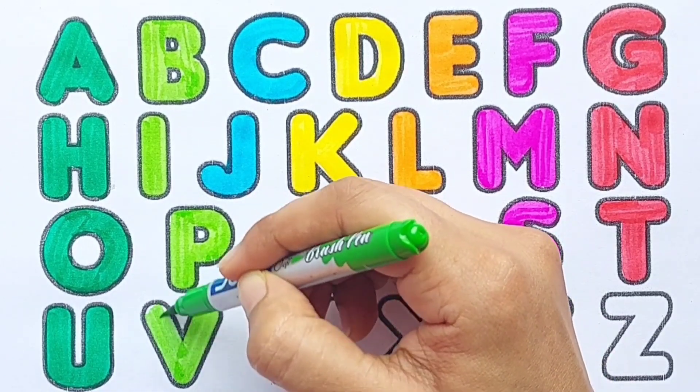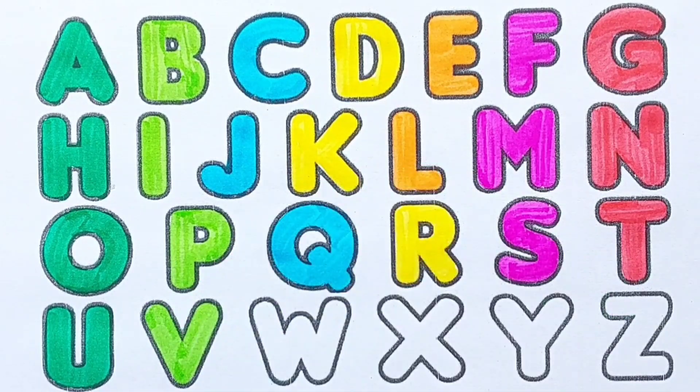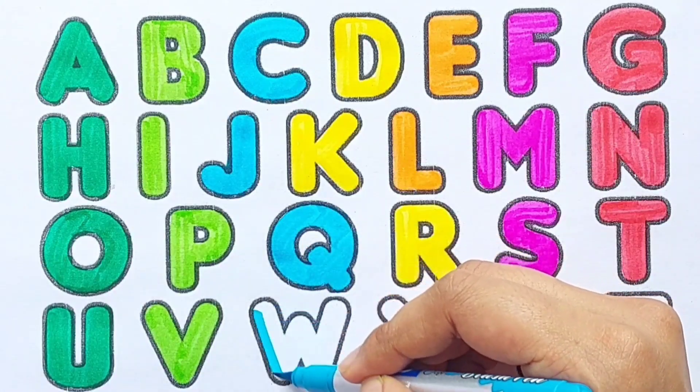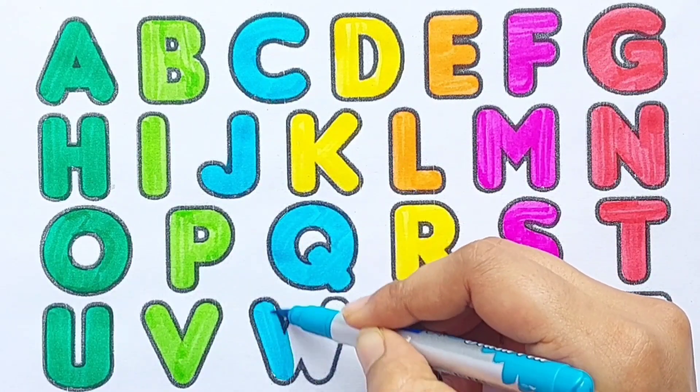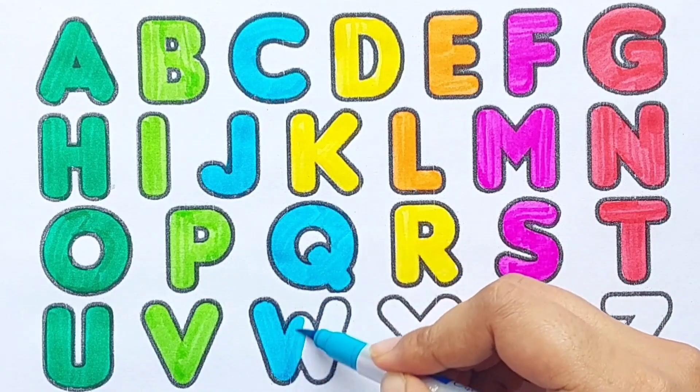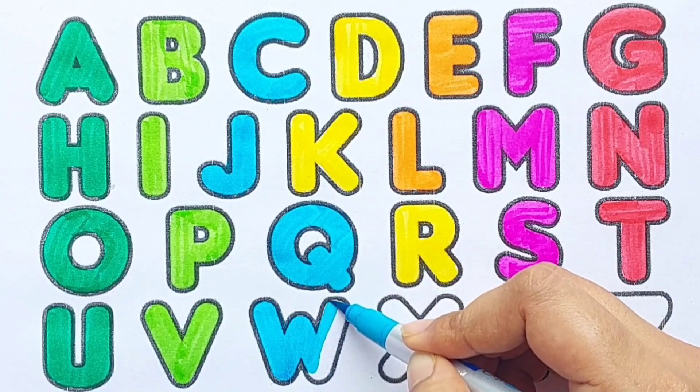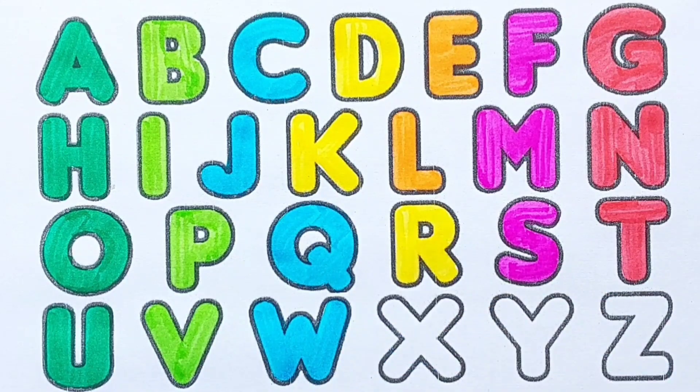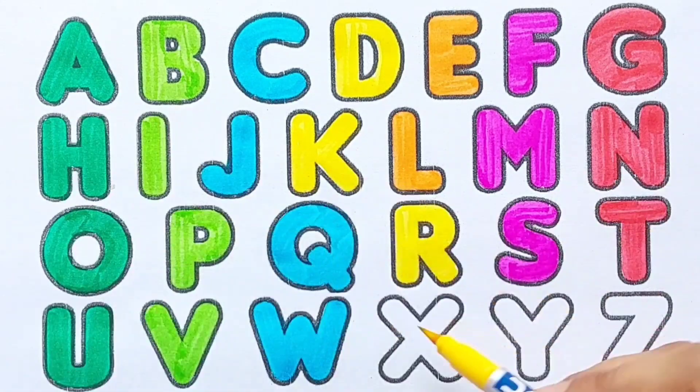V, V for van, sky blue color. W, W for watch, yellow color.